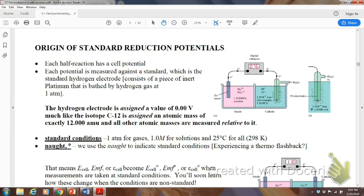The origin of the standard reduction potentials. There is a table of those that have been published and you'll be using those. On the AP test, they used to give you a whole chart of it and you had to go look them up. Now, they pretty much just give you what you need to use. It makes it easier and faster. So, each half cell has its own cell potential. It's measured against a standard, which is the standard hydrogen electrode, which is immersed in some platinum. The hydrogen electrode is assigned a value of zero, which is kind of like what we did with carbon 12 for the isotope.